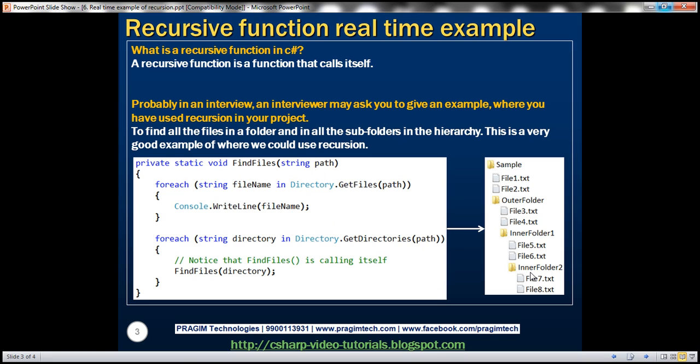And once it is in inner folder 2 what's going to happen? It's going to print file 7 file 8. It's going to come to this foreach loop and Directory.GetDirectories is not going to return any directory at which point the method returns. So the recursion is going to break and the control is given to the caller. So very straightforward method.